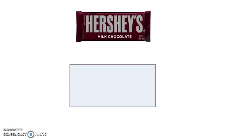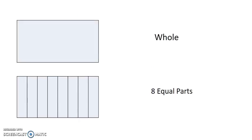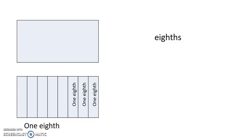Now let's partition our object into eight equal parts. How many equal parts make a whole object? Eight equal parts make one whole object. We name the parts eighths. So one part is one eighth and two parts are two eighths. How would we name three parts? Three eighths.